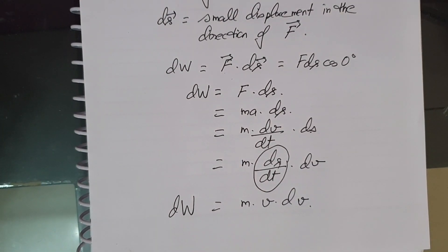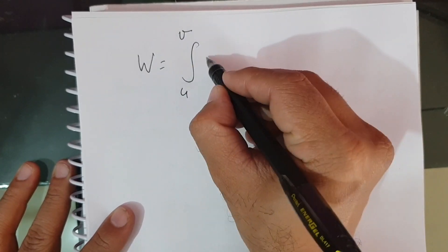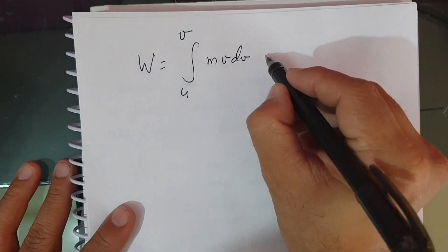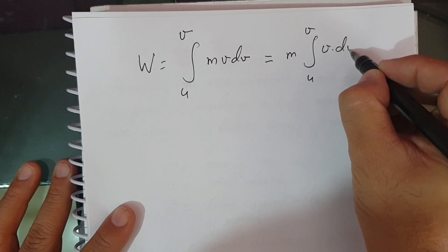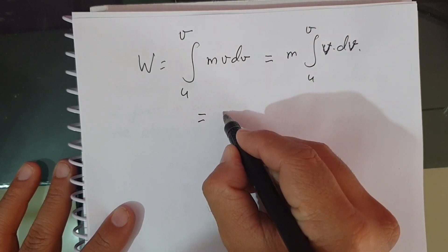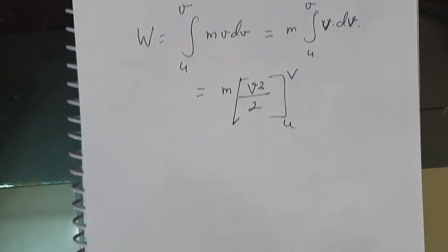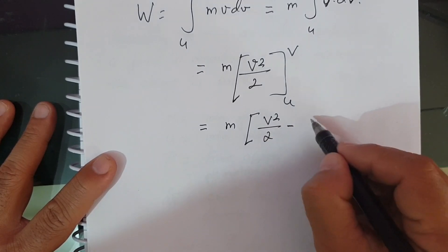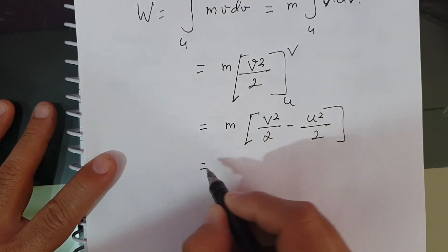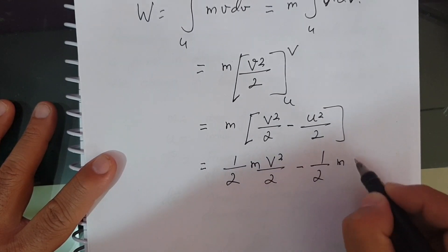The total work done by the force in increasing the velocity of the body from u to v is obtained by integrating: W = integral from u to v of m·v·dv. Taking m as constant, this gives W = m·[v²/2] from u to v, which equals m·(v²/2 − u²/2).